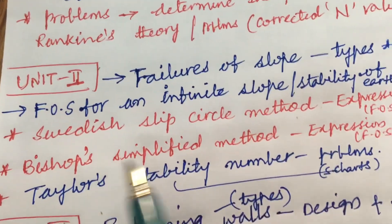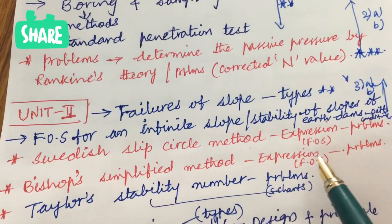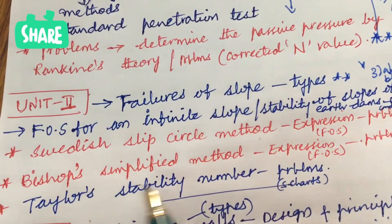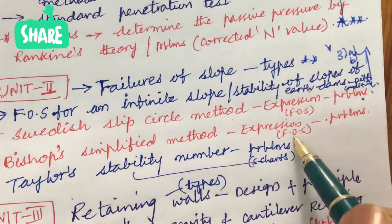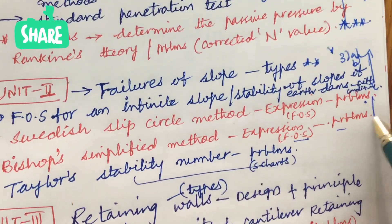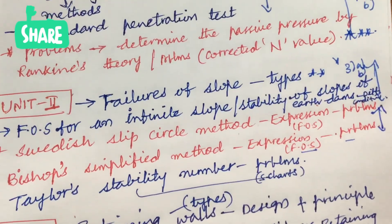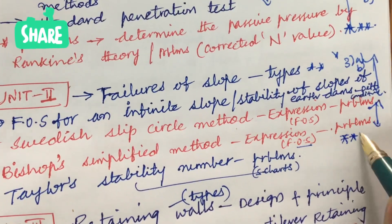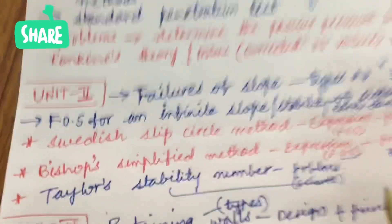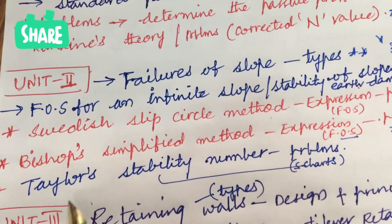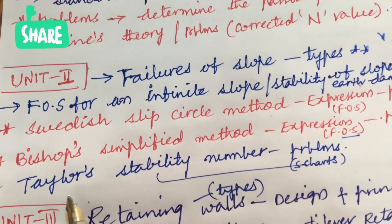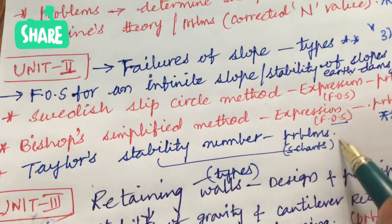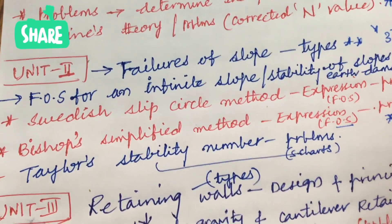Later, Swedish slip circle method, its expression for factor of safety and the problem related to this, as well as Bishop simplified method expression of factor of safety and the problems related. Based on these two concepts we can expect anyone or both may be the gunshot questions in the question paper for this academic year. They will be asking you for 5 marks to explain or write about the Taylor's stability number and using the stability number you are supposed to work out the problems.